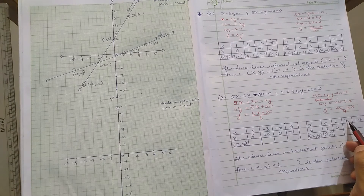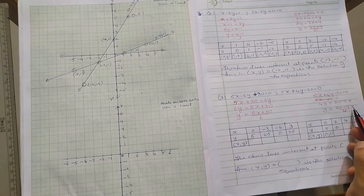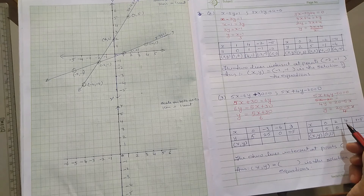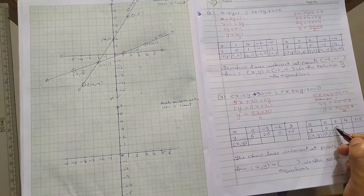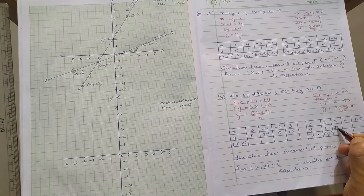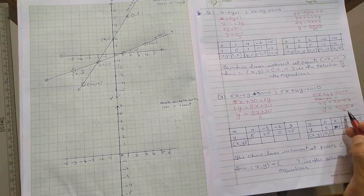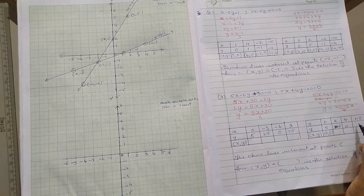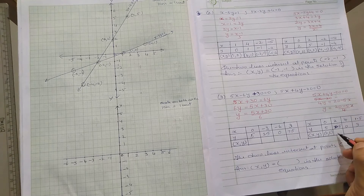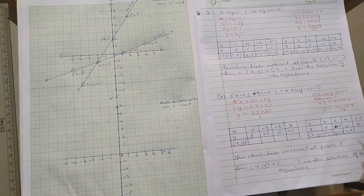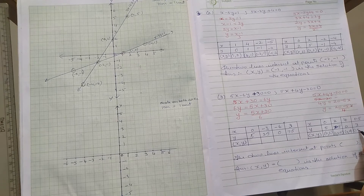When you put x equal to 4: 20 minus 5 times 4 is 20 minus 20, which is 0 upon 4, you will get 0. When you put x equal to 2: 20 minus 10 is 10 upon 4, you get 2.5. When you put x equal to 1.5, you will get 3. So the ordered pairs are (2, 2.5), (4, 0), and (1.5, 3).